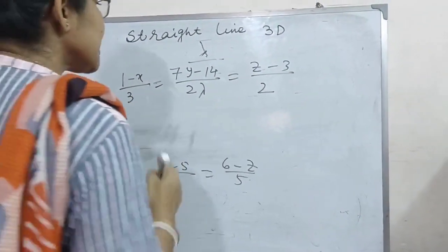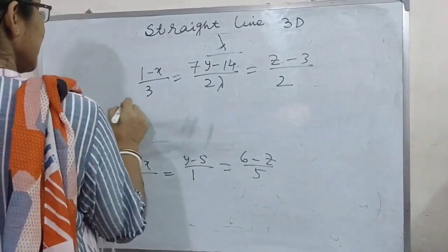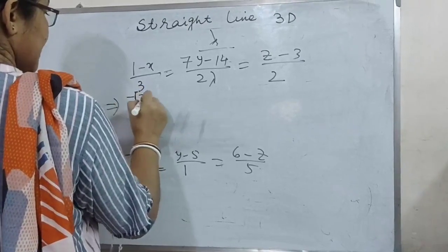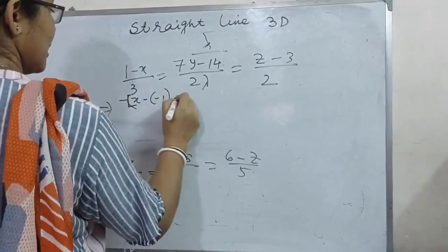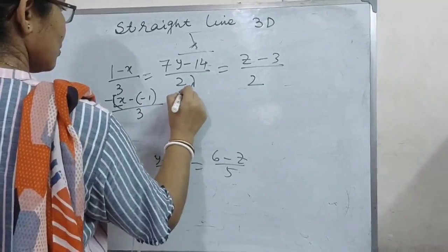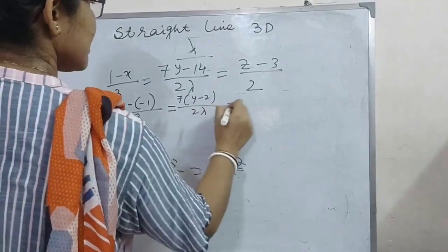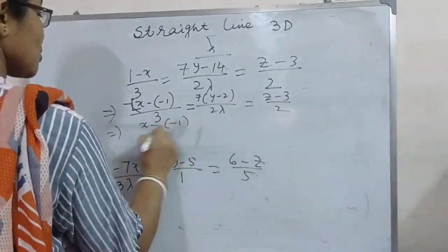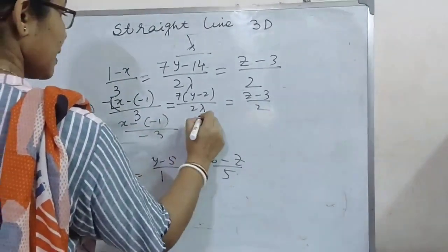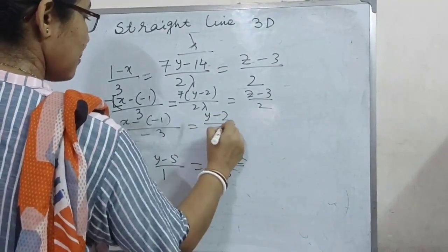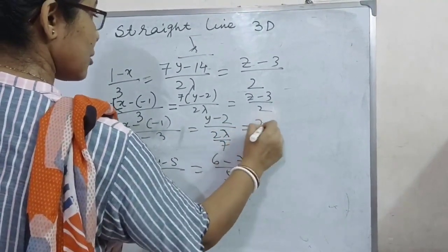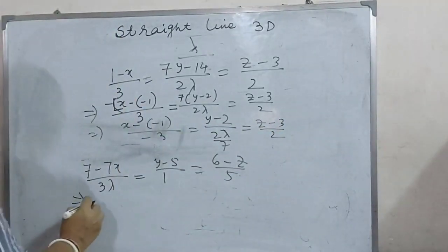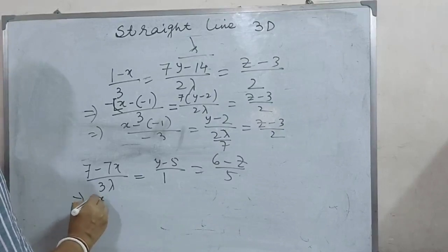First, we have to convert these equations into standard form. The standard form of the first equation is: (x minus (minus 1))/3 = (y minus 2)/(2 lambda) = (z minus 3)/2. This is the standard form of the first straight line.